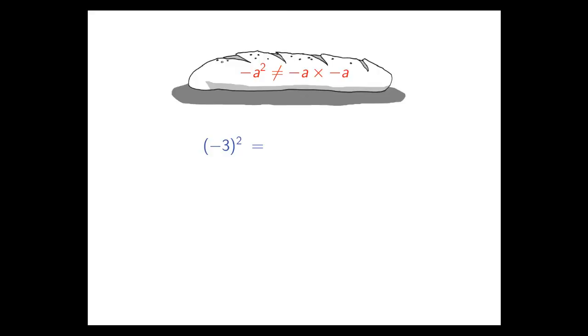Here we have minus 3 in brackets and we're squaring it. Now it's pretty clear that what we're being asked to do here is square the item that's right next to the power of 2. The brackets are indicating that it's the number minus 3. So in that case we take minus 3, multiply it by itself. Two minuses multiplied together make a plus, so we end up with positive 9.